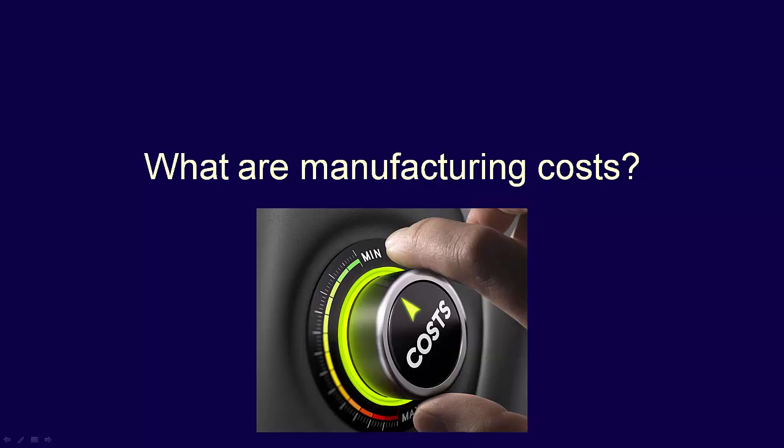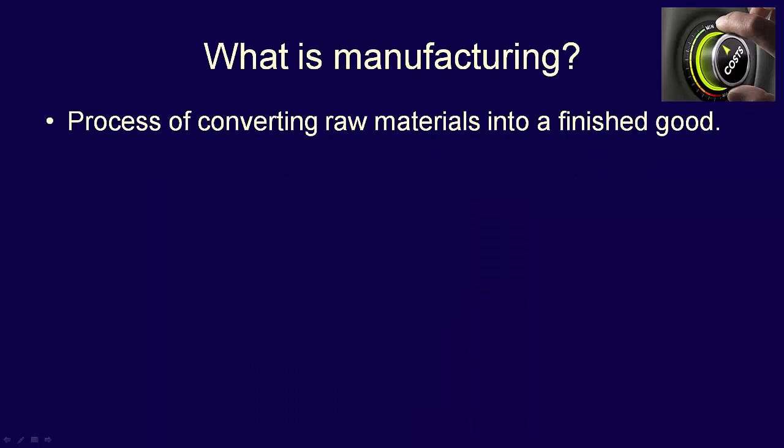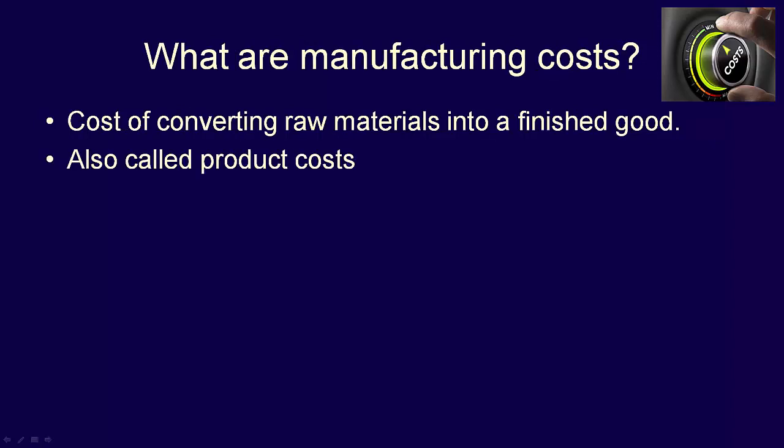What are manufacturing costs? First, we have to define manufacturing. Manufacturing is the process of converting raw materials into finished goods. That process involves costs — manufacturing costs. What are manufacturing costs, also called product costs?